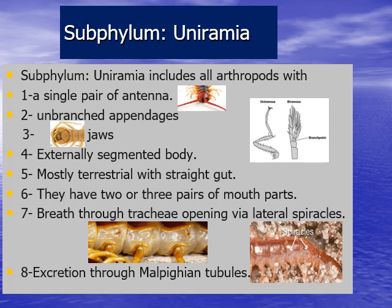Subphylum Uniramia includes all arthropods with a single pair of antennae, a segmented body, mostly terrestrial with a straight gut. They have two or three pairs of mouthparts, breathe through tracheae opening by lateral spiracles, and excretion occurs through Malpighian tubules.